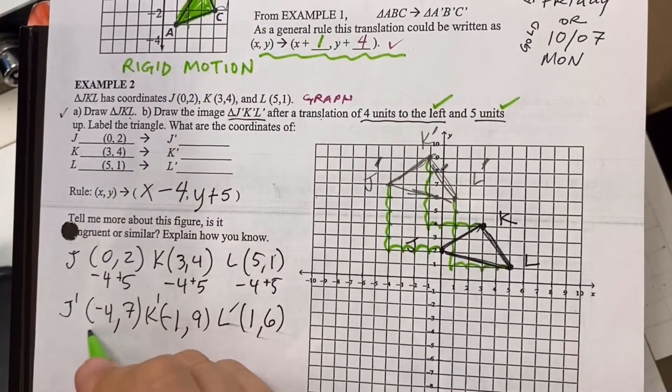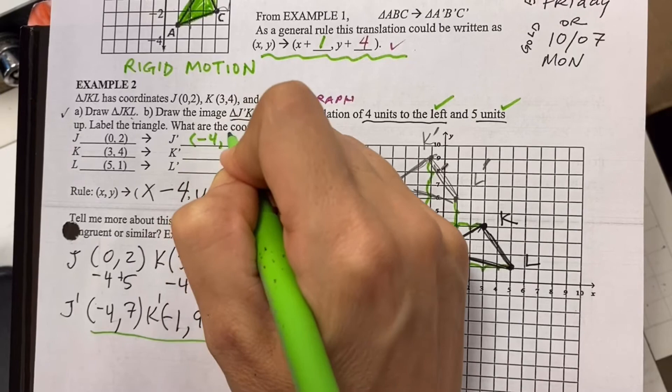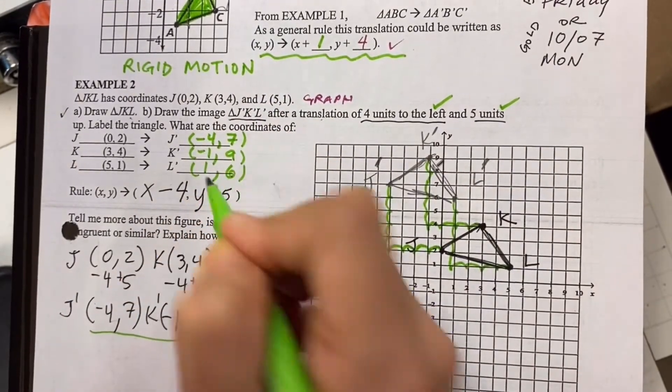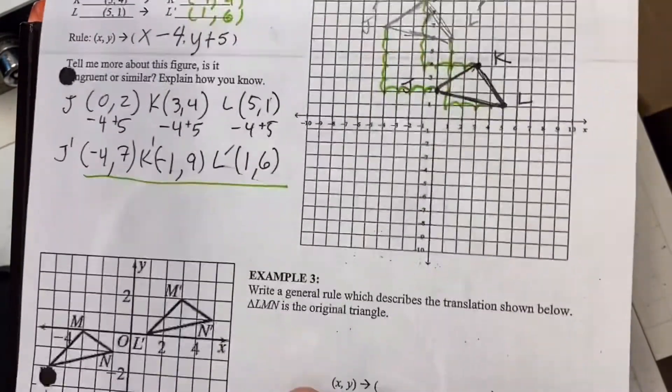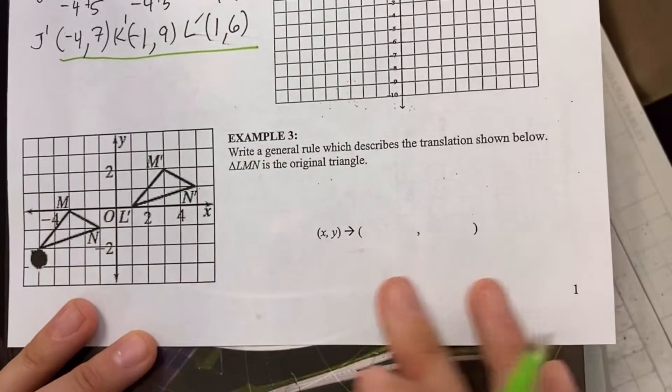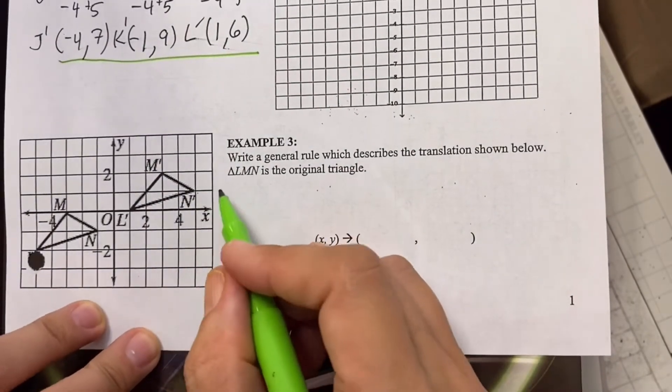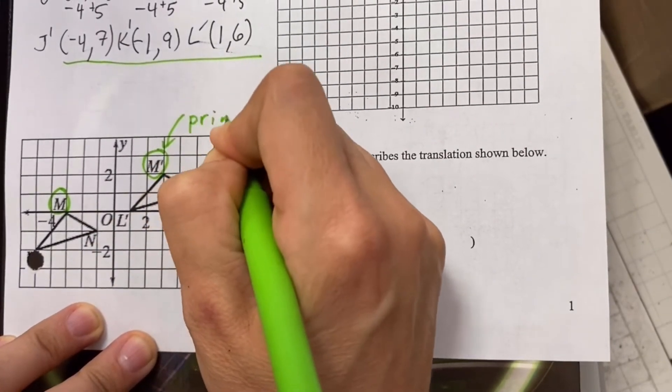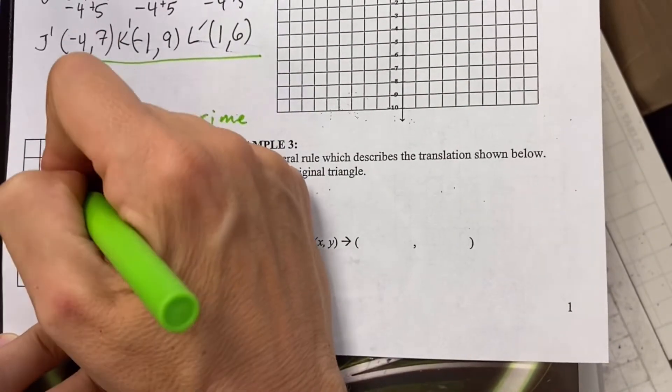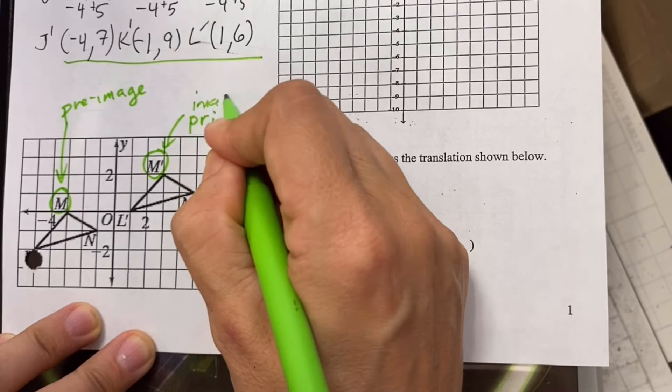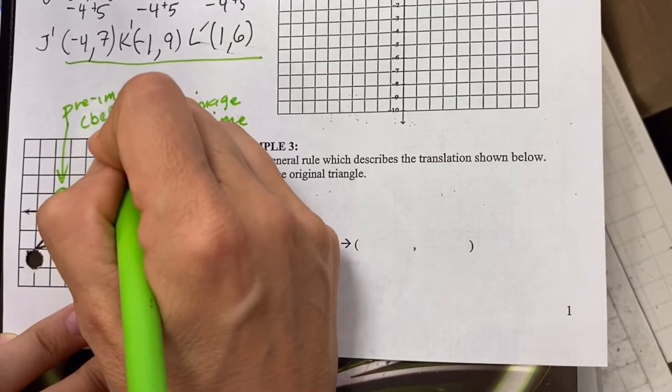So I'm going to put them in. Beautiful. Example three. So we have, write a general rule. So notice this doesn't have a prime, and this one has a prime. So this tells me, this is the pre-image, and this is the image. The image is the one with the prime. So this is kind of the before picture and the after.